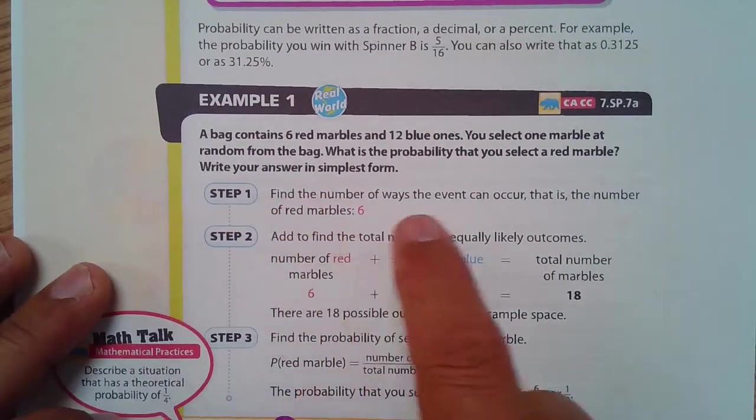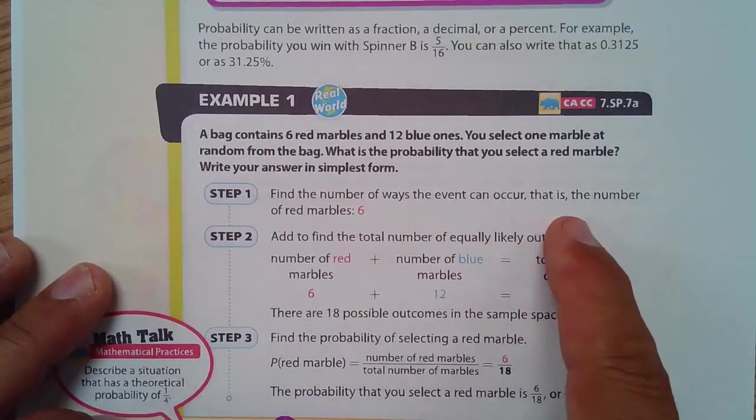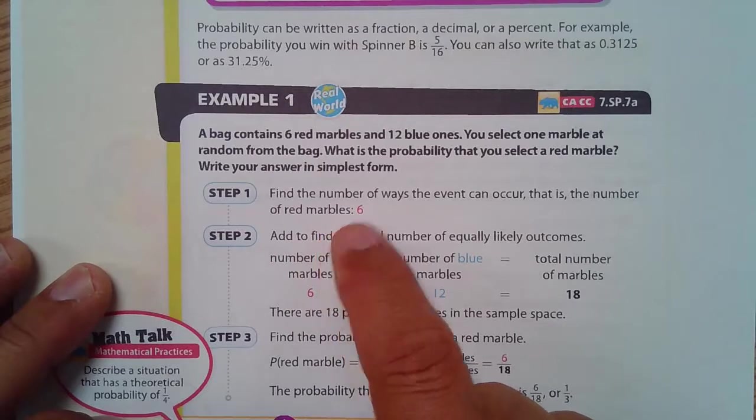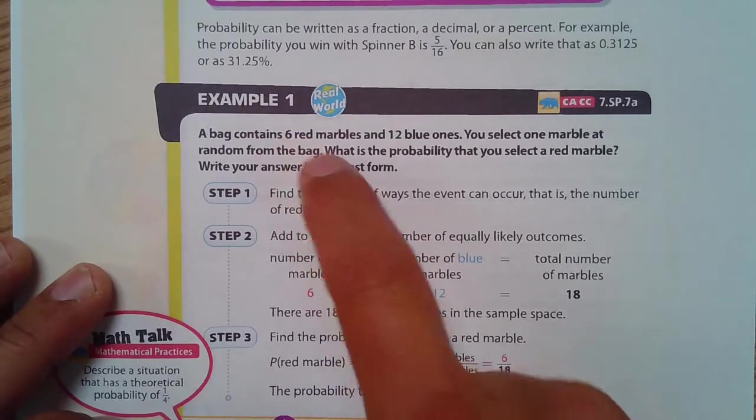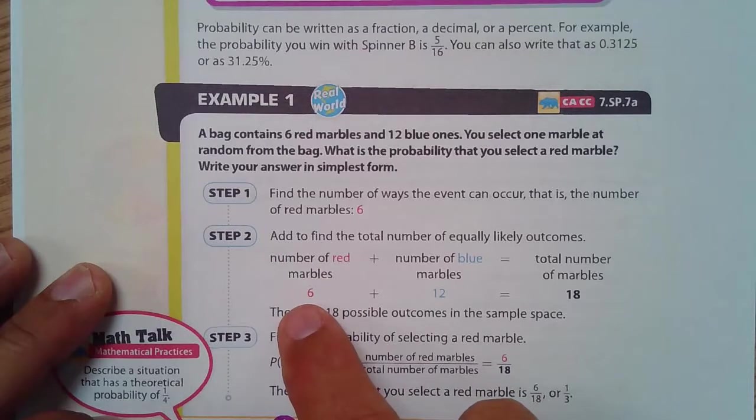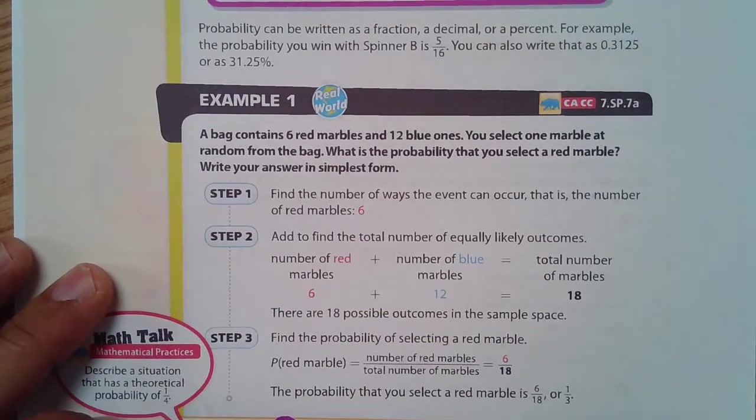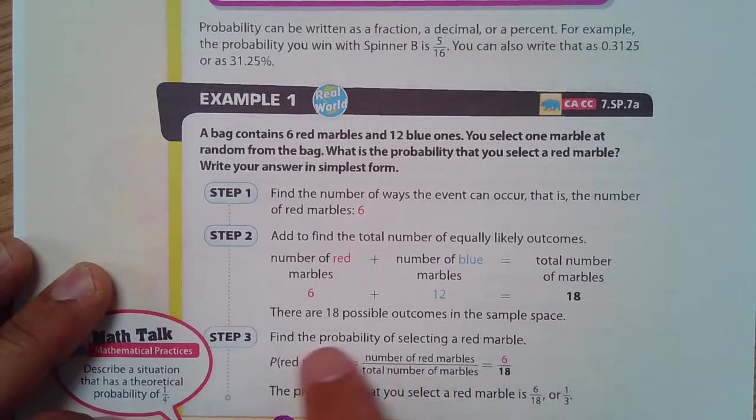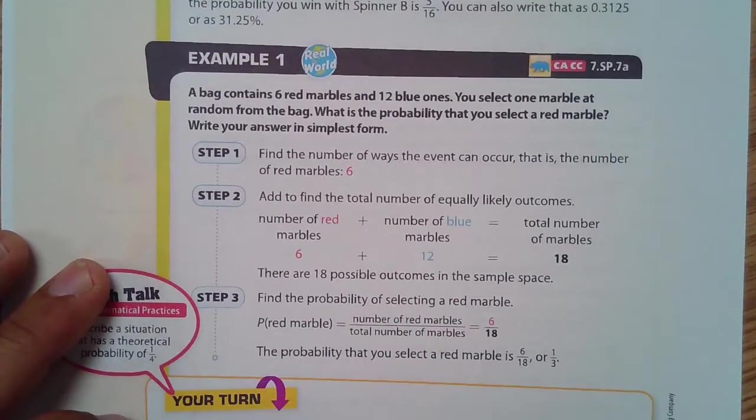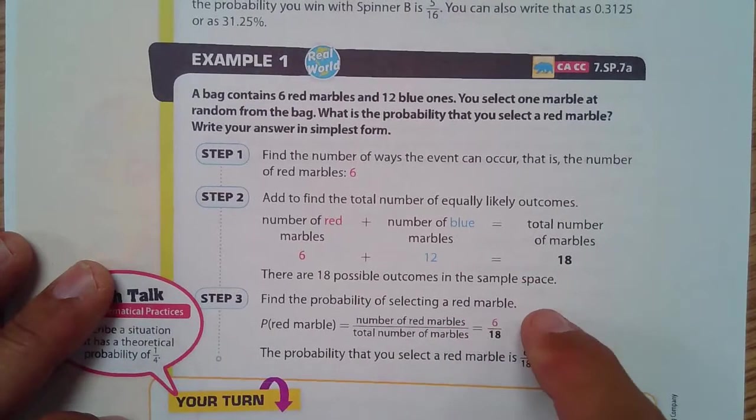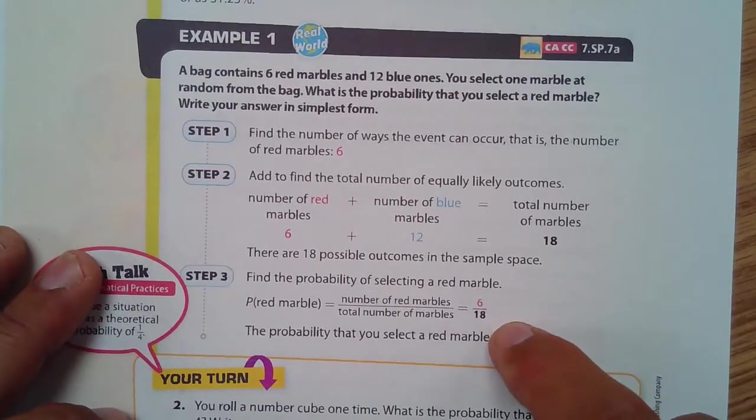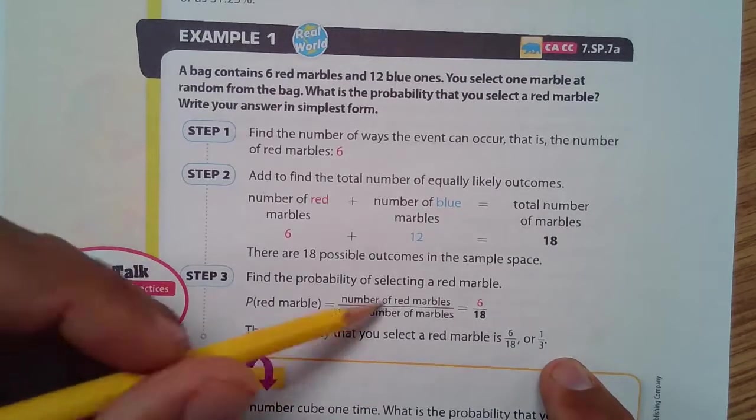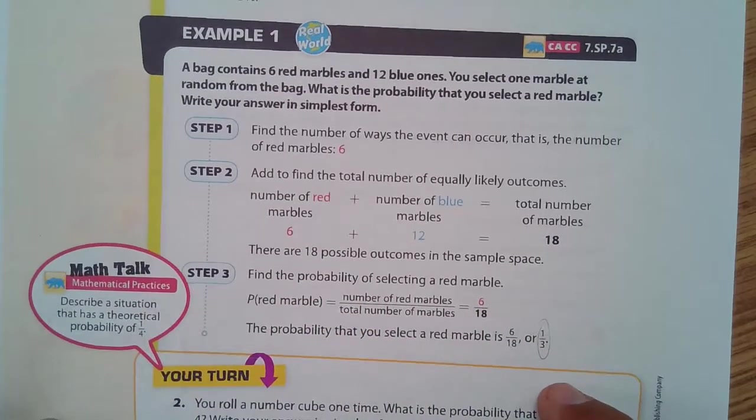Okay, we're going to find the number of ways the event can occur. That is the number of red marbles, which is 6, right there. And we need to find the total number of likely outcomes, so we have to add up all the marbles together, which is 18. There are 18 possible outcomes that could happen, so we're looking for the ones that are red. So, the ones that are red are 6 out of 18, which simplifies to 1 third. So, our probability of selecting a red marble is 1 third, simplified.